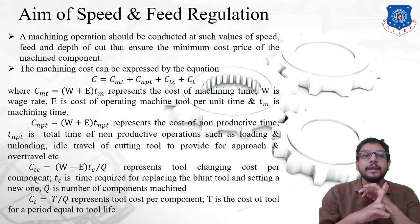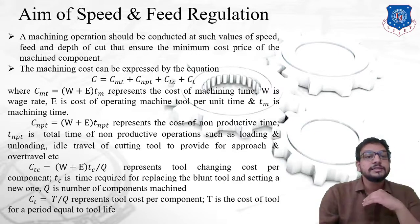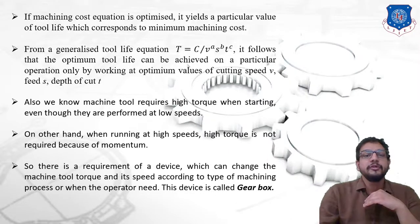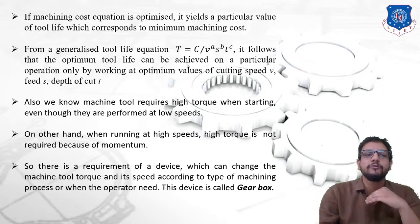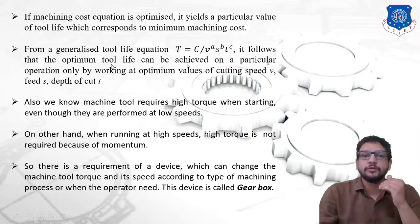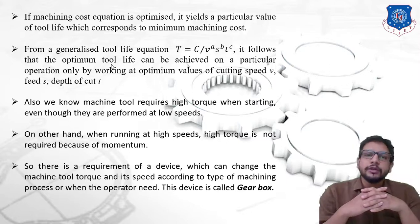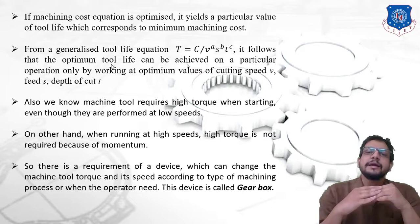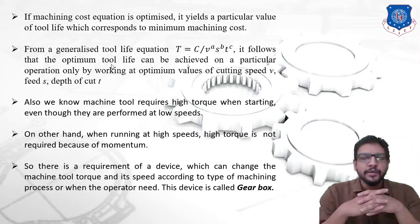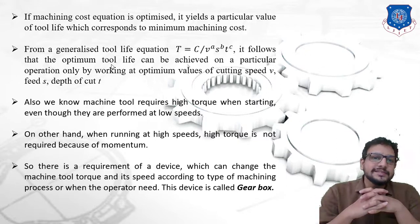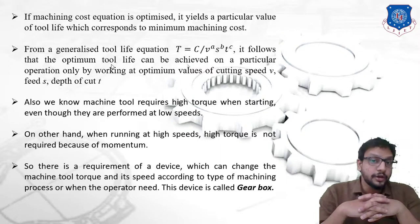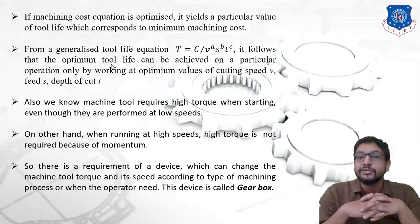When the machining cost equation is optimized, it yields a particular value of tool life corresponding to minimum machining cost. This can also be concluded from the generalized tool life equation — Taylor's tool life equation — which you would have studied in Manufacturing Processes. According to that, tool life is: T = C / (V^a × S^b × t^c), where T is tool life, C is a constant, V is cutting speed, S is feed rate, and t is depth of cut.